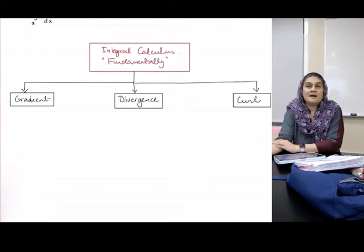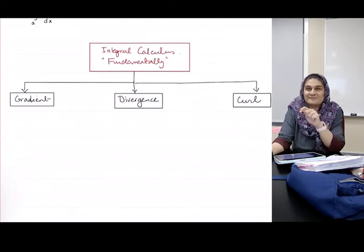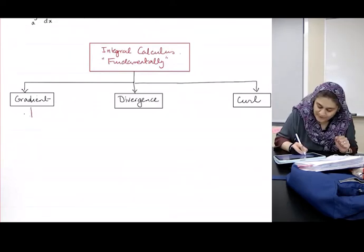Gradient was when the Del operator operated on a scalar. Divergence was when the Del operator had a dot product with a scalar. Curl was the cross product with a vector. Okay, so in case of gradient, I also called it the slope.